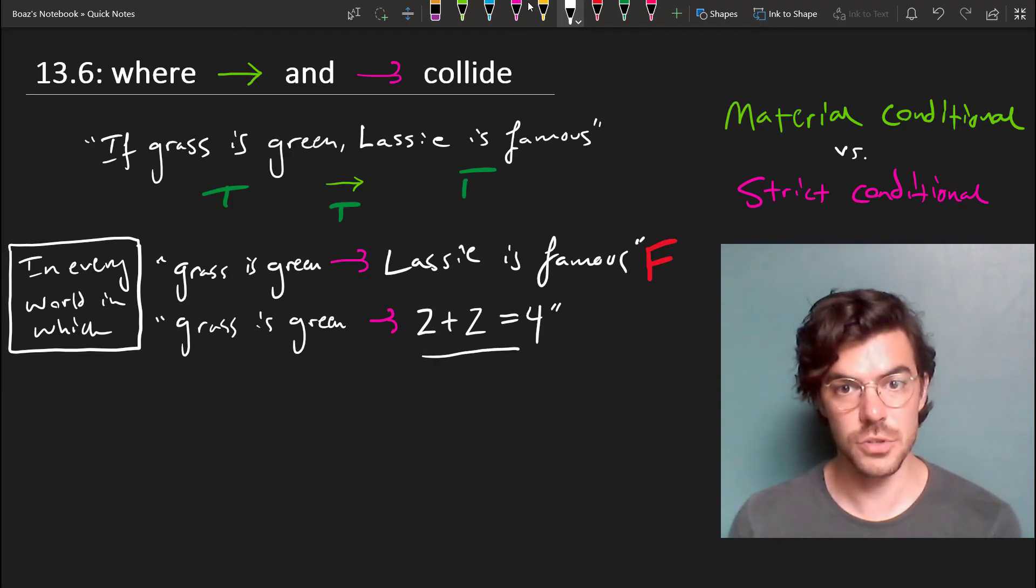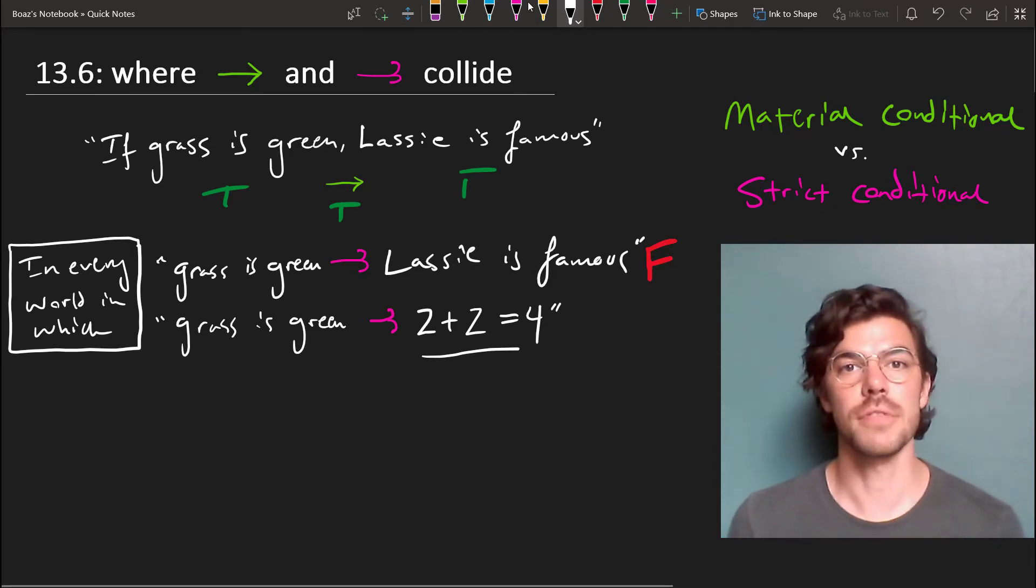Well, this consequent is true in every possible world. There is no possible world in which 2 plus 2 equals 9. And so this comes out as a true strict conditional.